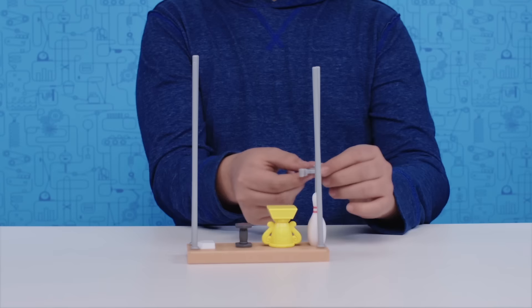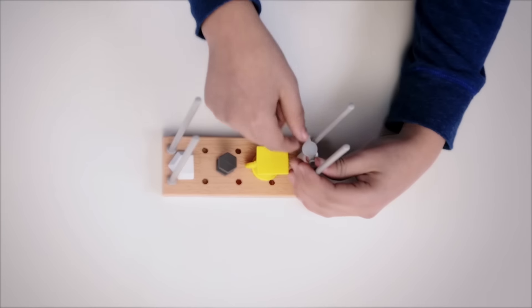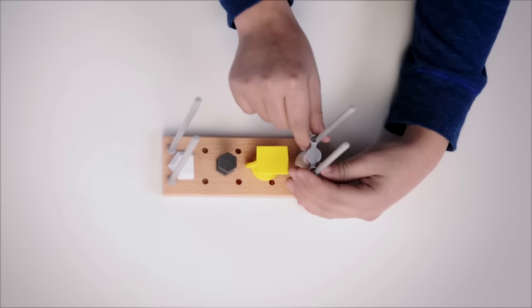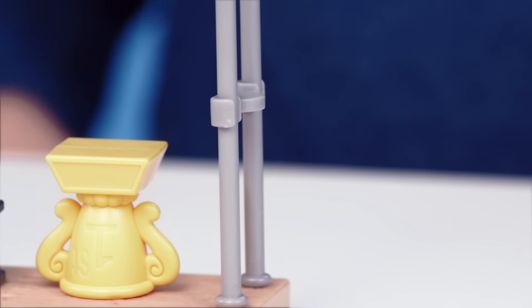Using the bowling pin as a guide for proper height, attach the flat support beam across the two short poles. Then, remove the bowling pin.